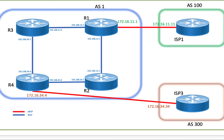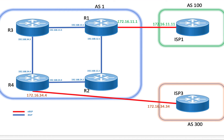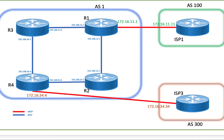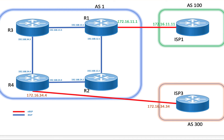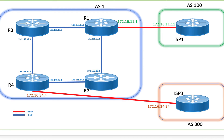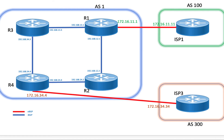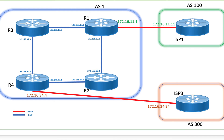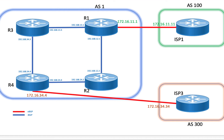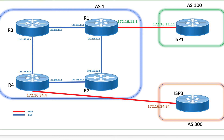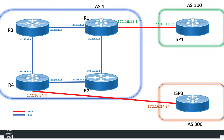Now, we will track a route propagating from ISP1 via AS1 to AS300. This will be the flow of route propagation from ISP1 towards ISP3 in this topology. ISP1 is under AS100 and ISP3 is in AS300. Let's go ahead and start by looking at router ISP1.